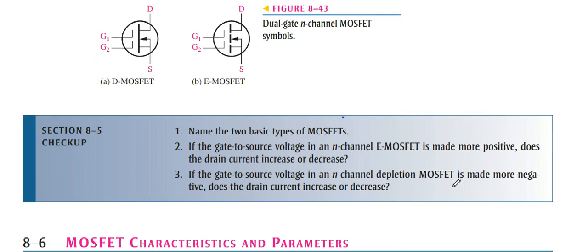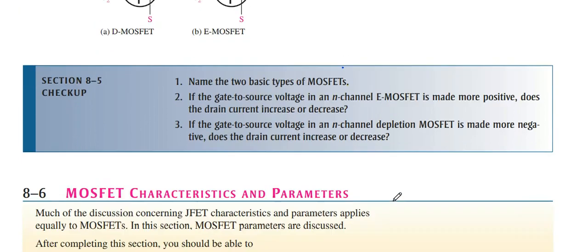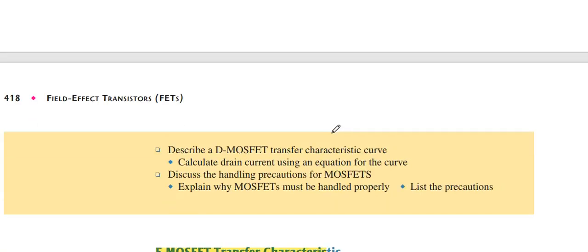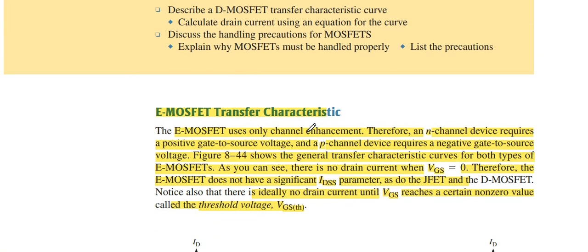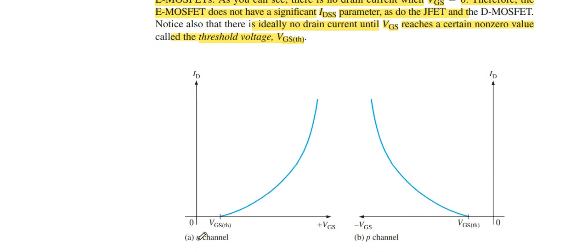Next point is MOSFET characteristics and parameters. E MOSFET transfer characteristics. This is for N-channel and this is for P-channel. As we know that E MOSFET VGS, voltage gate to source, must be more than threshold voltage. Then ID current increases or E MOSFET operates.